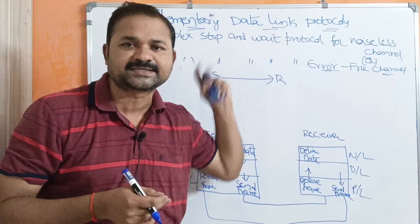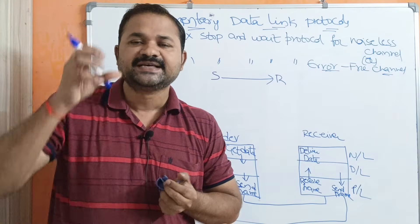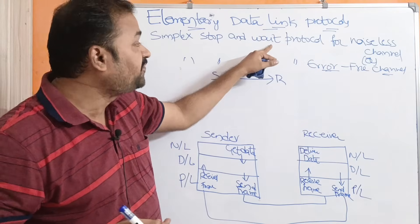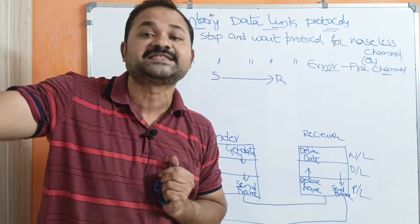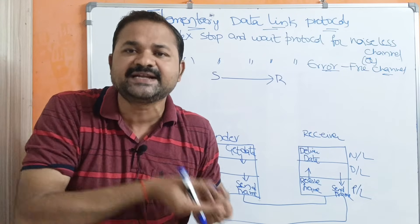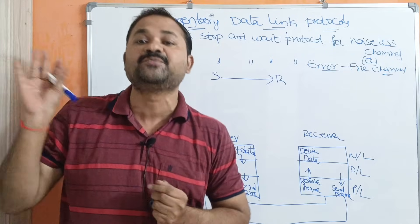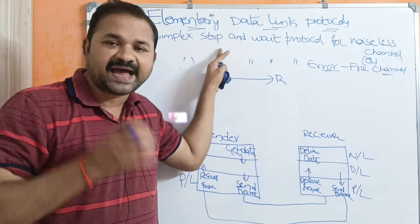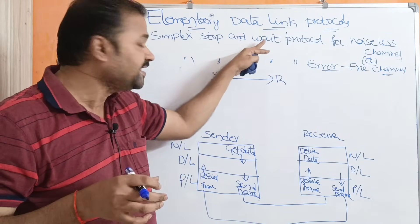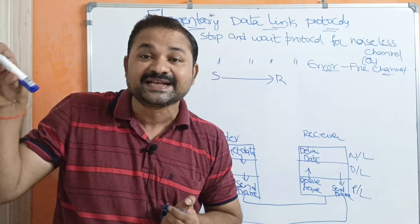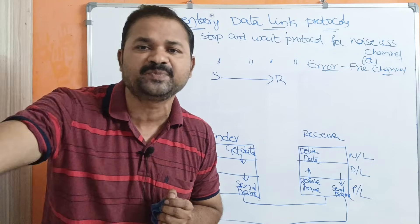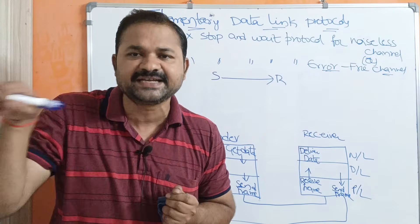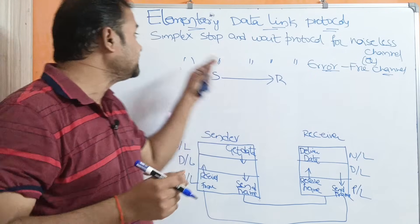Stop-and-wait means the sender sends a frame, then stops and waits for an acknowledgement from the receiver. After the sender receives the acknowledgement, the sender can send another frame to the receiver. That is why it is called stop-and-wait — the sender sends a frame, stops, and waits for the acknowledgement for that corresponding frame.